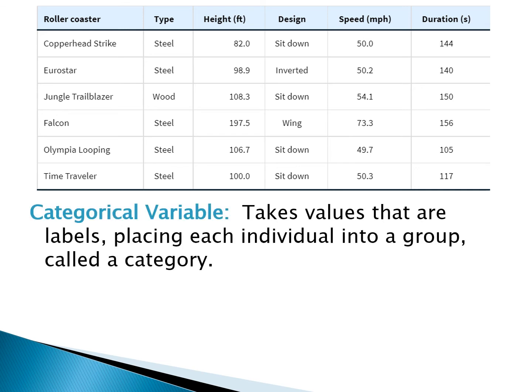When it comes to variables, there are two different types. The first is called a categorical variable. A categorical variable is typically non-numeric — its values take on labels. For example, the type gets classified into a label, in this case either steel or wood. Those labels can be separated into categories, hence the name categorical variables.